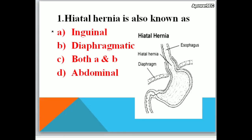Today we can discuss some important questions related to the gastrointestinal system, so please listen carefully. First question: Hiatal hernia is also known as — A. inguinal, B. diaphragmatic, C. both A and B, D. abdominal. The correct answer is diaphragmatic.